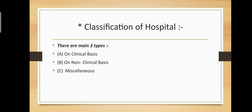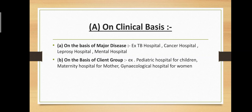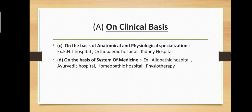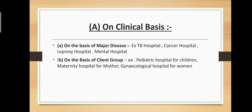Next point: classification of hospital. Hospitals are mainly classified into three types: A) on clinical basis, B) on non-clinical basis, and C) miscellaneous. Let's start with clinical basis, which is further divided into four types.